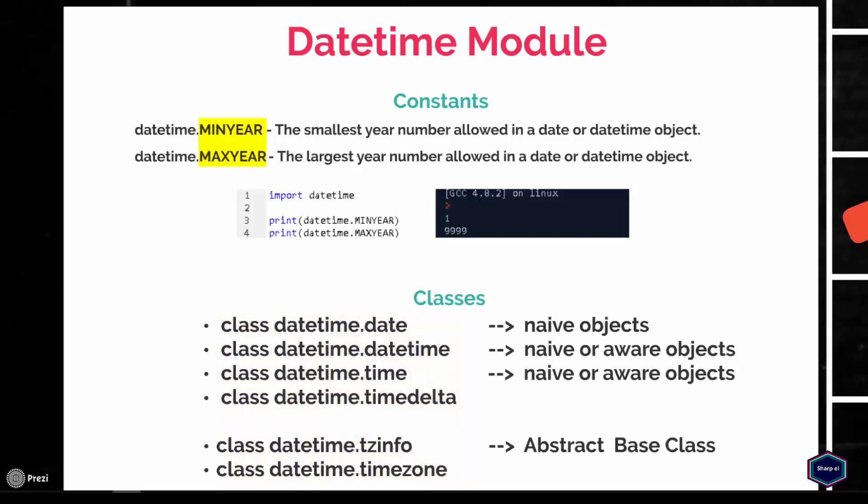The constant MINYEAR returns the smallest year allowed in a date or datetime object, and it has an integer value of 1. Whereas the constant MAXYEAR returns the largest year allowed in a date or datetime object, and it has an integer value of 9999.